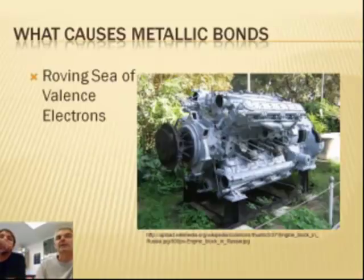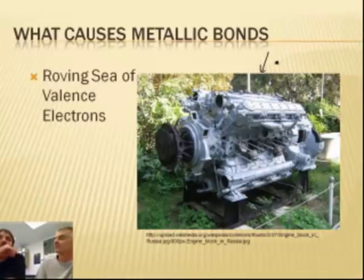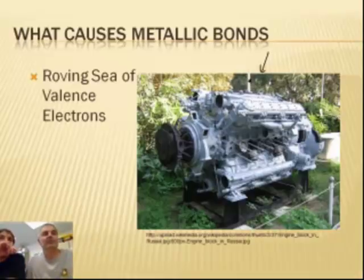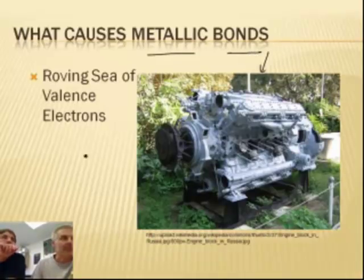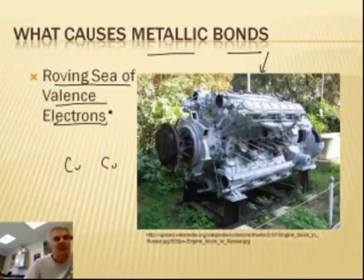Now, we need to talk about... Here's another shiny, I found this on Wikipedia. It was really cool. It's an engine, a very large engine. Actually, that's what it says. It says a large engine from Russia. Maybe it's a tank engine. I don't know. Anyways, so this is... What causes the metals to connect to each other? Why is the copper connected to the copper? Well, there's this concept called a roving sea of valence electrons. What in tarnation do I mean by a roving sea? What in the heck is that?